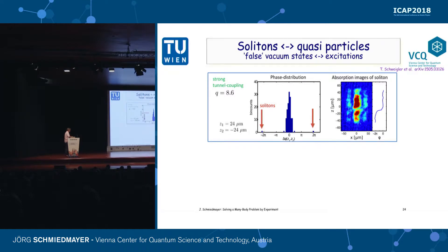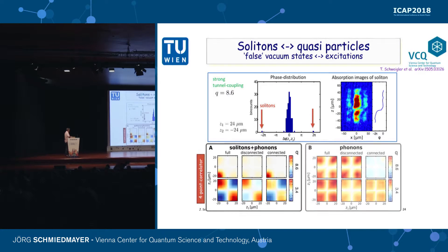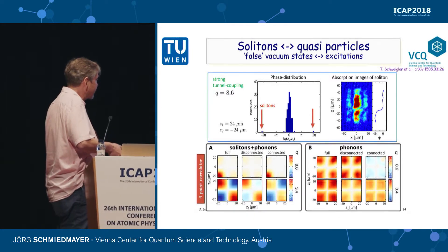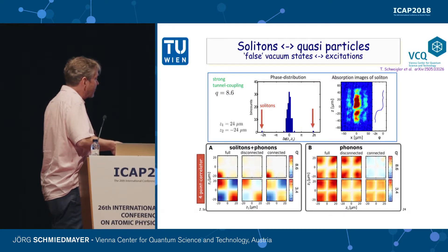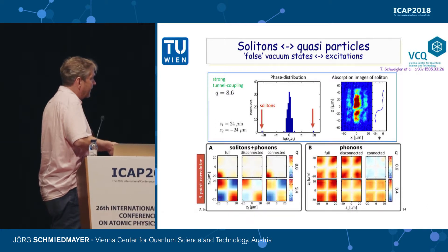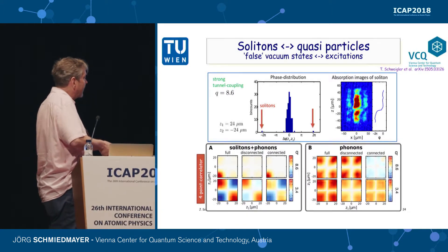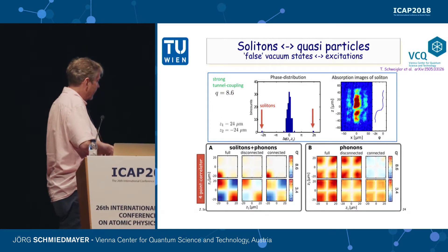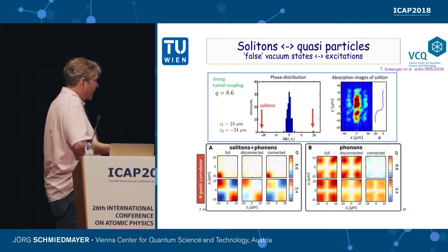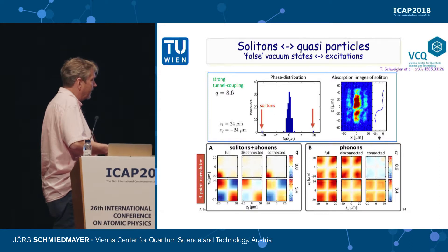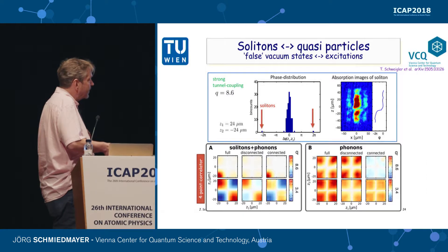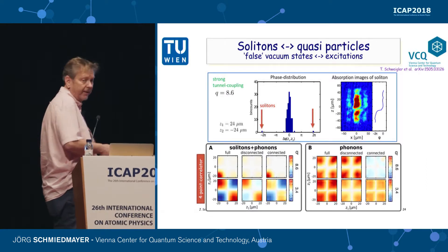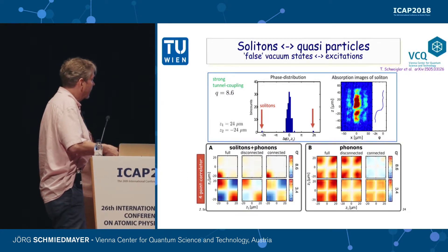We can take such states and try to take out the solitons to see what happens. For example, looking at the four-point correlator where you have solitons and phonons, you see huge values of the four-point function. When I take out the solitons and the phase locking is very strong, the fluctuations left over have a connected part of essentially zero — describable by the false vacuum state, not by a Gaussian model. Even after removing the solitons, there's strong leftover connected part. The scale here is about a factor of 50 smaller, and this scale is about a factor of 300 smaller.